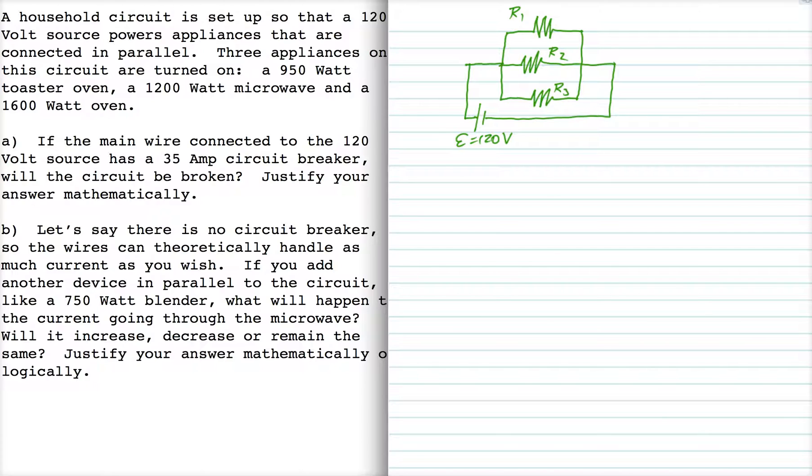Now we're told that R1 is the toaster oven, R2 will be the microwave, and R3 will be the oven.